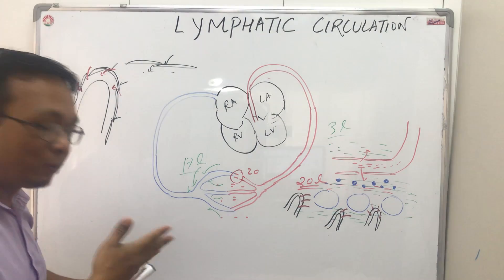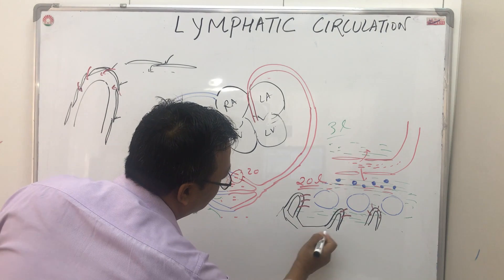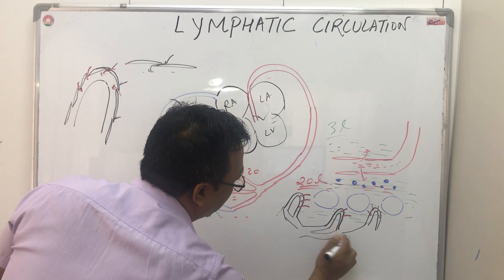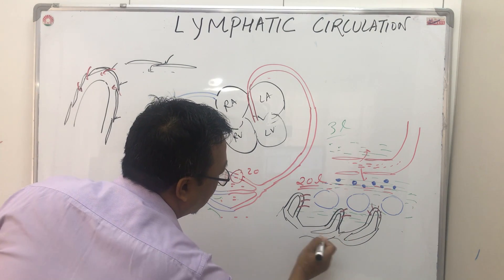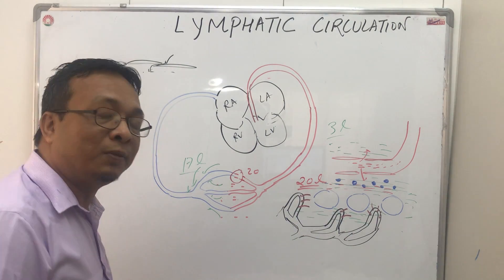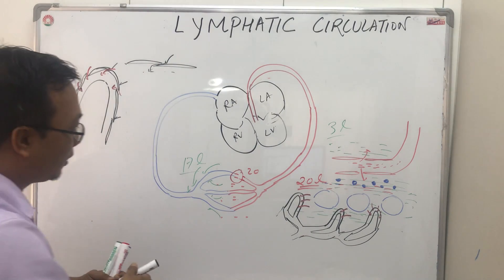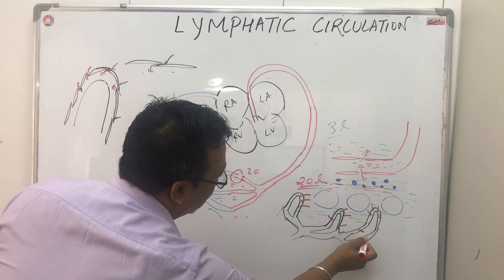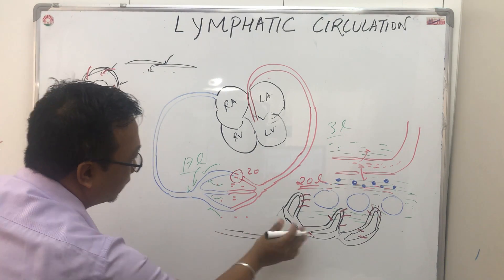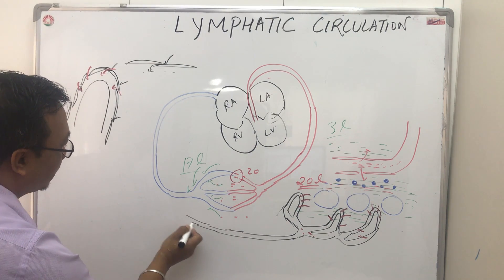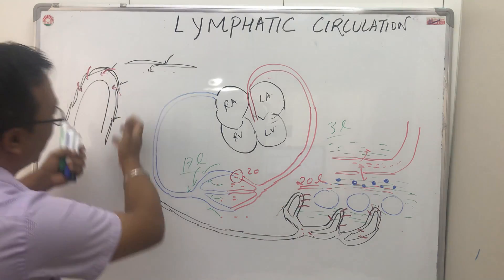These capillaries are called lymphatic capillaries and they are part of lymphatic circulation. They collect all the interstitial fluid — that three liters of interstitial fluid which is finding a way to go out. This fluid moves inside, and then these lymphatic capillaries are going to become bigger and they are called lymphatic vessels.